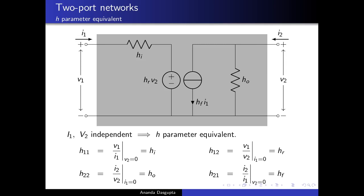The reason the H-parameter is going to be very important in our future work is that circuit components like transistors — which essentially take in a current in one place and produce a related current in another place — are modeled rather well by the H-parameter equivalent circuit. In particular, for a transistor you can use a simplified model where you even ignore h_r and h_O, ending up with a much simpler final effective model. We will see that later when we study transistors. Now that we have talked about the three basic kinds of two-port equivalent networks, let us show one application.